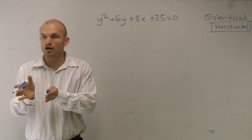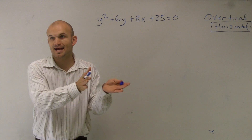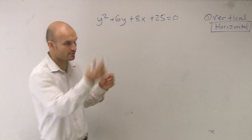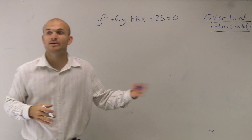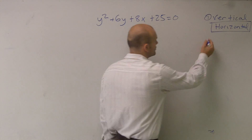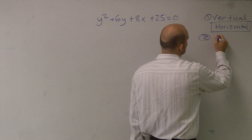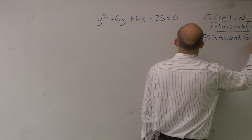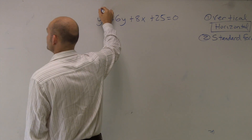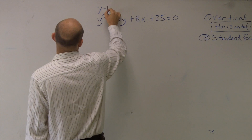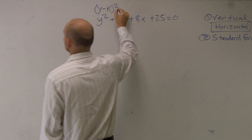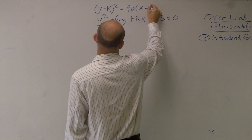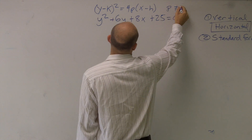We're going to be finding our focus and our directrix, which is going to be along the x value. We're going to be working with that. So we're going to have a parabola opening to the left or opening to the right. The next thing is to write it in standard form: (y minus k) squared equals 4p times (x minus h), where p cannot equal 0.